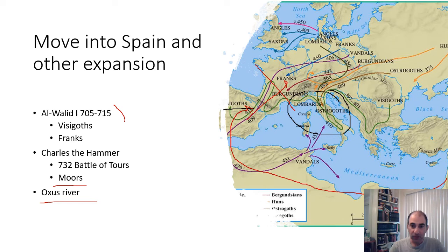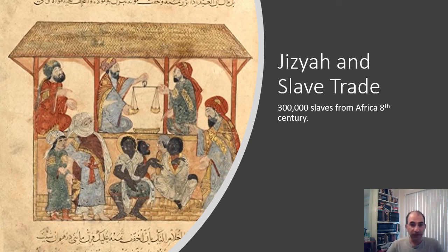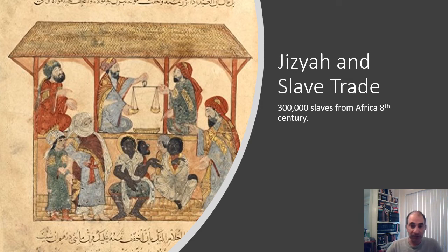There are a couple other things to know about the Umayyad period. They continued the jizya — the tax on non-Muslims. Another really important event was the slave trade from Africa. A lot of people immediately think of the 1700s triangle trade, but this happened much earlier. During the Umayyad period in the eighth century, the Umayyads moved into Africa and began purchasing slaves. There were about 300,000 slaves taken from Africa during the Umayyad era.